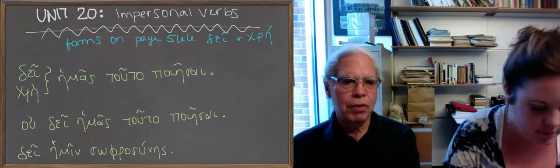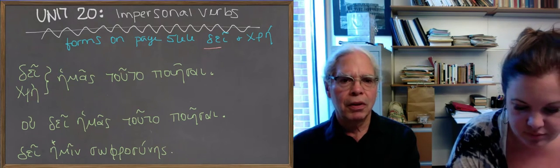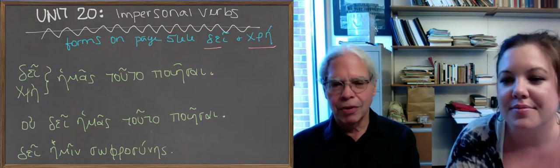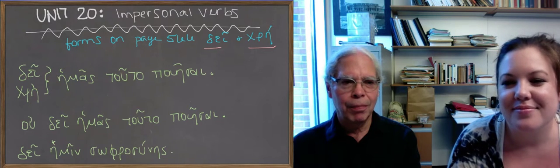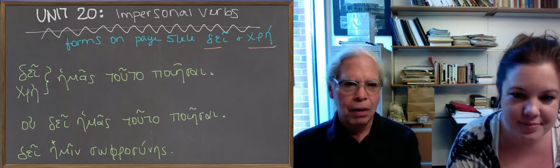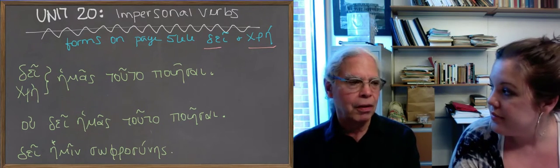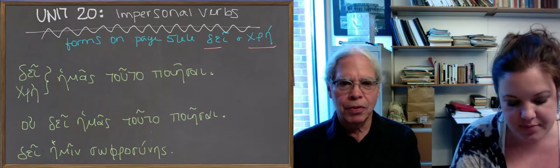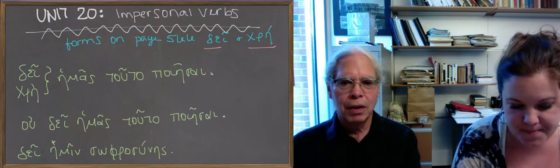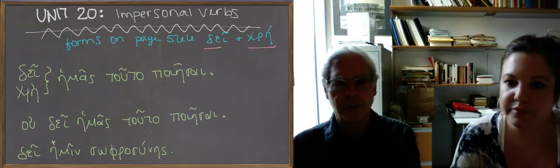This lesson introduces you to two of them, δεῖ (dei), which means it is necessary, and χρή (chre), which also means it is necessary. Let's not mince words here. χρή is originally a noun that functions as a subject in a verbless sentence, and then it becomes, because it means need, and then it means there is a need and then it becomes just a verb.